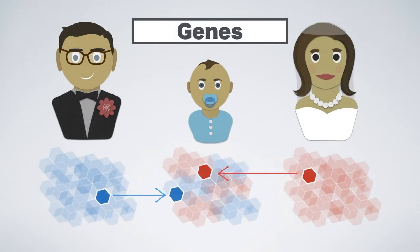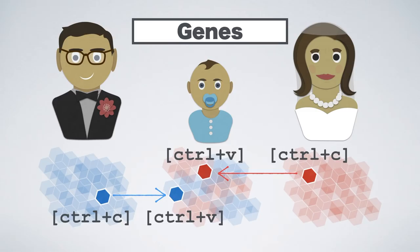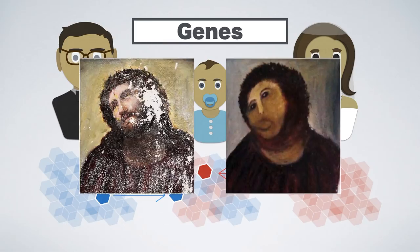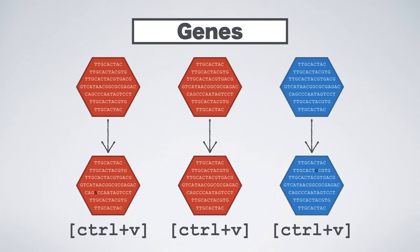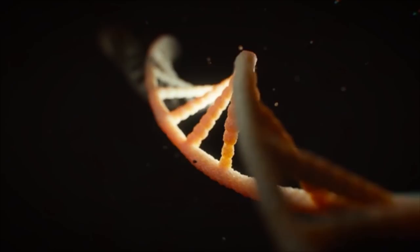Here's the catch. Every gene which you received from either one of your parents is in fact only a copy of their original gene. And not all copies are perfect — mistakes are made, and so it happens that some of your genes are similar but slightly different from the parent genes they were copied from.